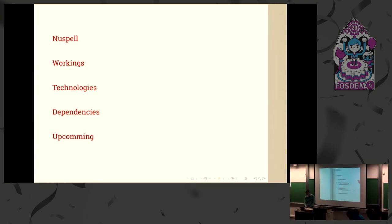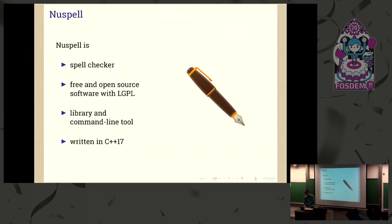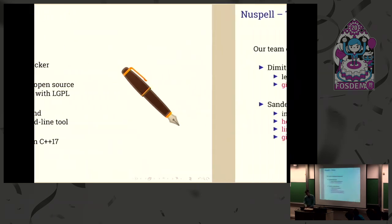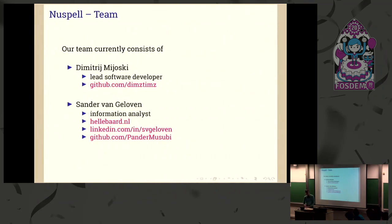In short, Nuspell is a spell checker. It's free open software. It consists of a library and a command line tool, and it's written in C++17. Our team consists of Dimitri from Macedonia and myself from the Netherlands.